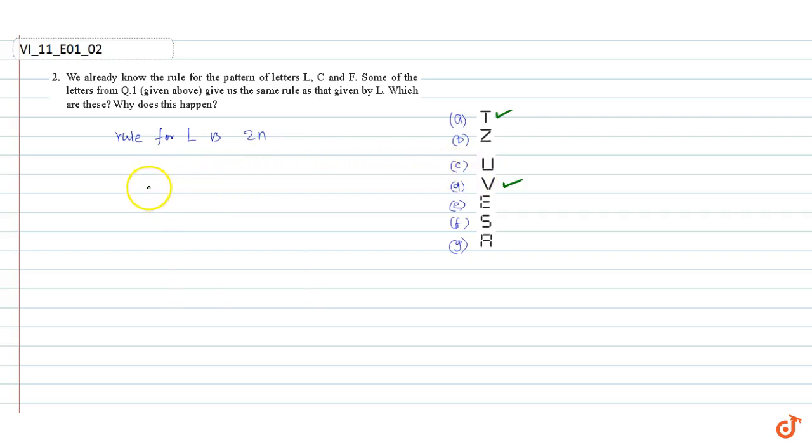Therefore our answer is A and D. This happens because the rule for T and V is 2N. That is the same for L. These are our answers.